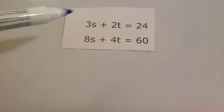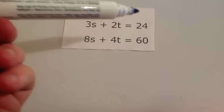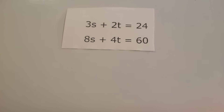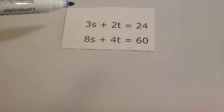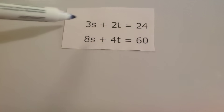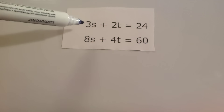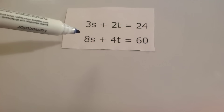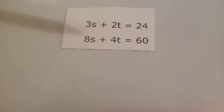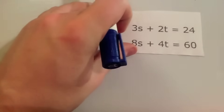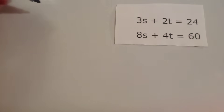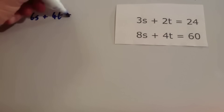Next we've got 3s plus 2t equals 24 and 8s plus 4t equals 60. To make the coefficients match, we could multiply the top by 8 and the bottom by 3 to get 24s in both — however, the easiest approach here is to double the top equation, because that gives 4t to match the 4t in the bottom equation.